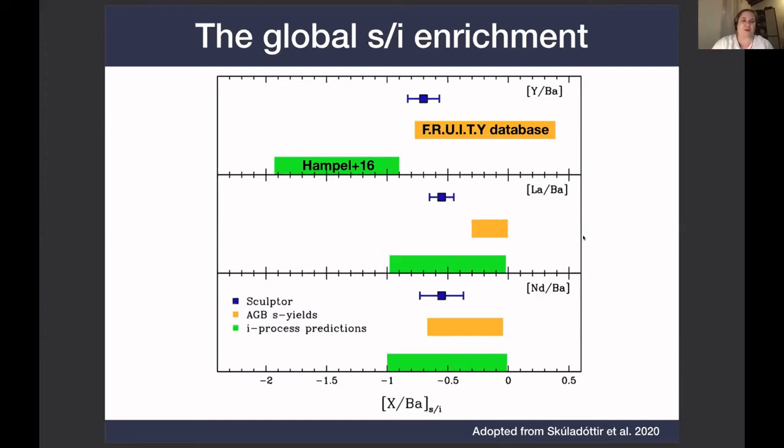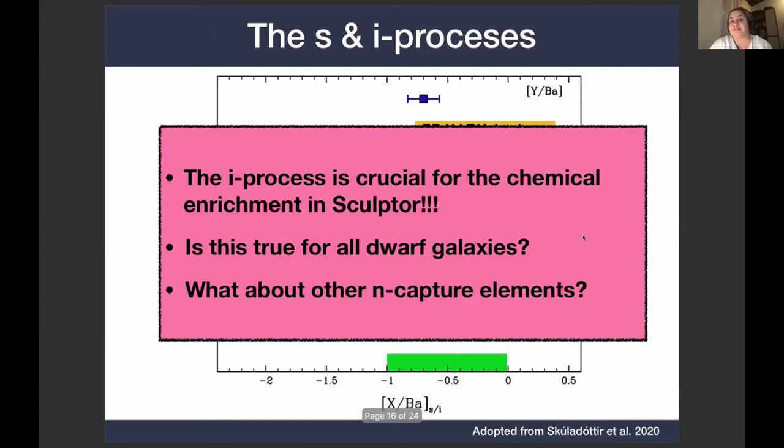But like with all promising results, this raises a lot of questions. Does the i-process have a big impact in all dwarf galaxies? Is this a universal property, or is it only Sculptor? And can a more complete abundance pattern tell us something more concrete about the i-process site itself? This is all very new. We're only starting to move in this direction, but we're hoping that with more data, we will start to really provide some important insights into the i-process.